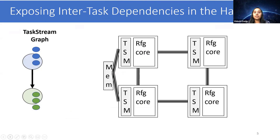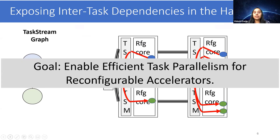In the previous example, the dependencies would now be satisfied by passing through these units. Our goal is to enable efficient task parallelism for reconfigurable accelerators.